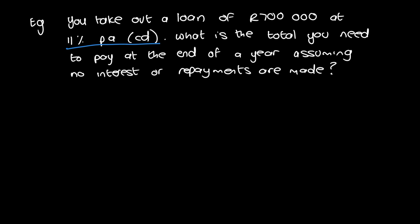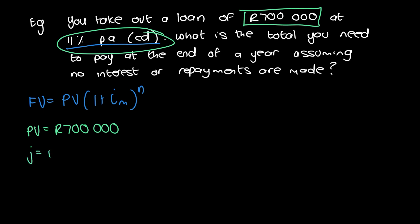So let's start off by just reminding us that it is compound interest, so the future value equals PV times 1 plus i_m to the power of n. Okay, so let's look at everything that we know. So we know that the loan is for 700,000, so we know the present value equals 700,000. Now we have the nominal interest rate over here. How do we know it's the nominal interest rate? Because it says per annum and in brackets, compounded daily. So this is j, and that's 11% per annum compounded daily.